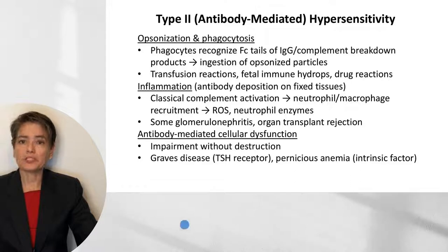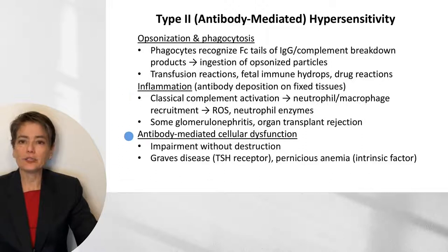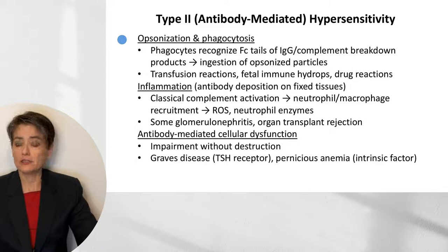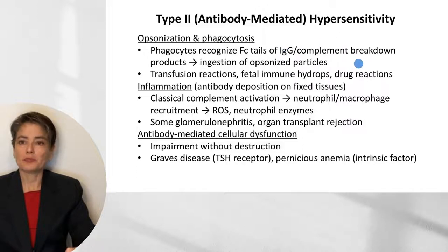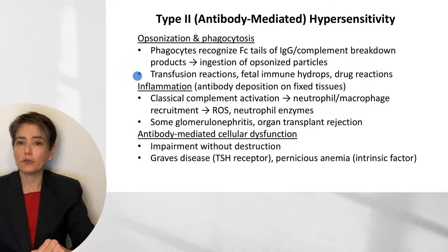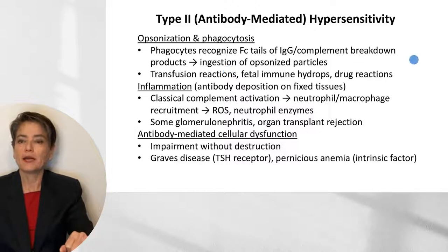This brings us to type 2, or antibody-mediated hypersensitivity. There are three ways that antibodies can be pathological or cause damage. The first: the role of an antibody is to opsonize and cause phagocytosis in an appropriate immune response. But in hypersensitivity, this occurs in an inappropriate fashion. Phagocytes recognize the Fc tails of IgG, or complement breakdown products, to ingest opsonized particles. We see this pathologically in transfusion reactions, fetal immune hydrops, and drug reactions.